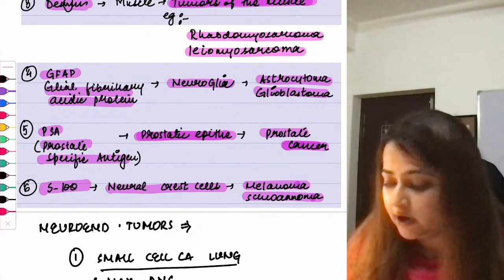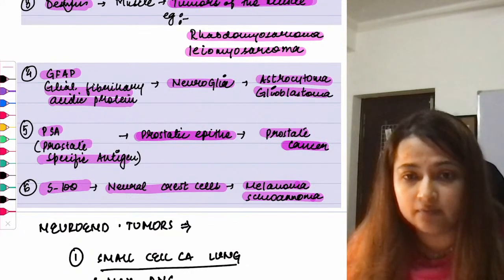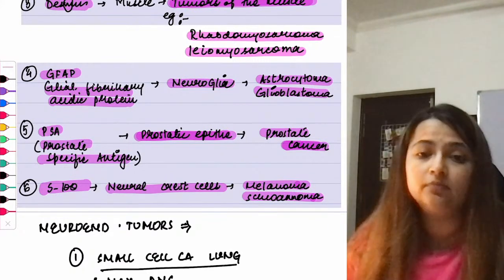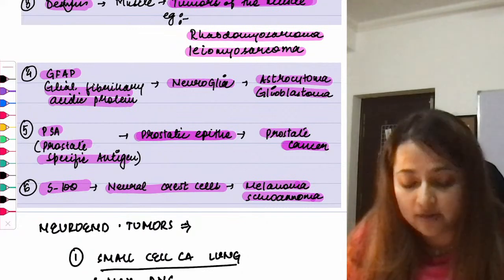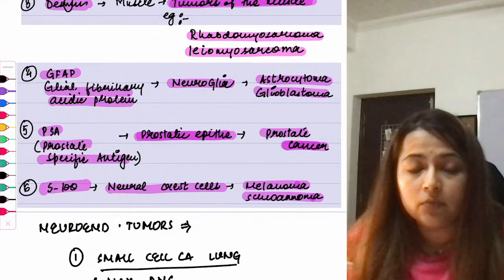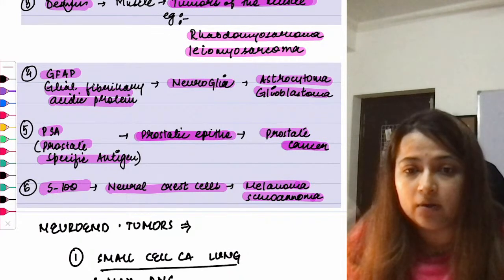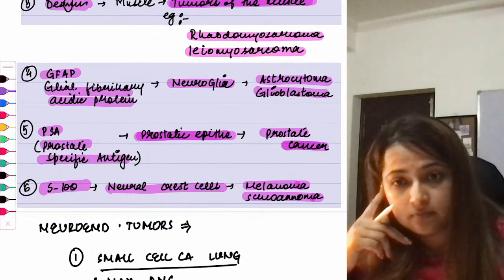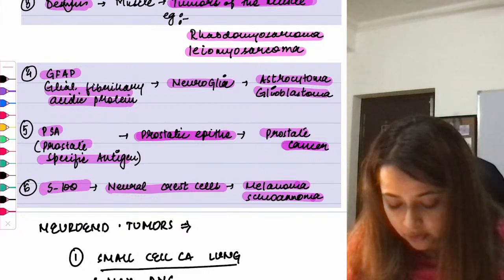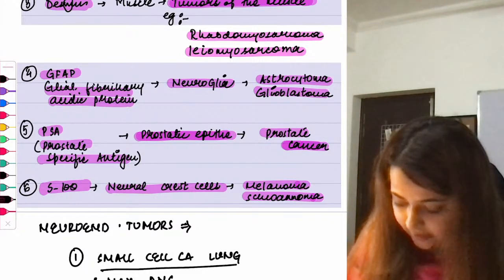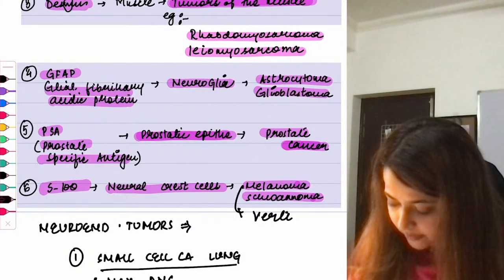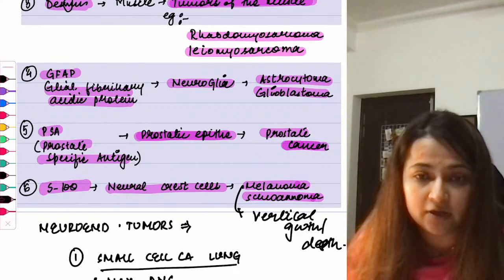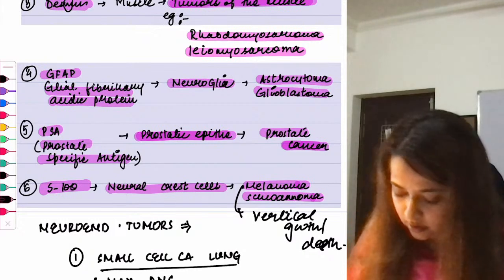Regarding melanoma: read about the ABCD criteria at home. The prognostic indicator of melanoma is the vertical growth or depth — not horizontal growth. The greater the vertical depth, the poorer the prognosis.